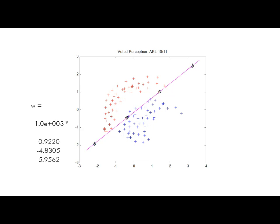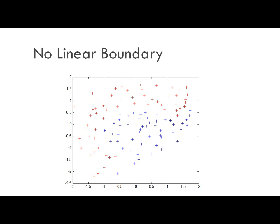If we use polynomial basis functions, these two classes can be separated. Using a quadratic or degree-three polynomial can separate these two data sets, but we cannot decide what the degree of the polynomial should be. If we use a degree-10 or degree-7 polynomial, it is quite possible that the polynomial may overfit this problem.